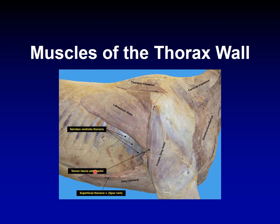If you recall, I've talked about this vein when I mentioned alternative sites for venipuncture in the horse other than the jugular vein — the cephalic, the saphenous, and the transverse facial. The superficial thoracic vein, also called the spur vein, is an important vessel. It's a large vessel and can be accessed easily. We will also mention the clinical relevance of the caudal border of the long head of the triceps muscle shortly.